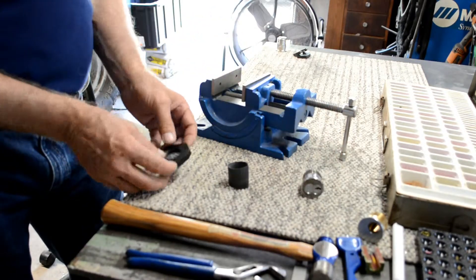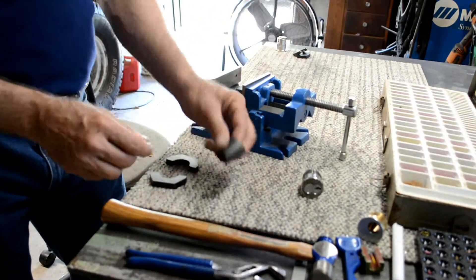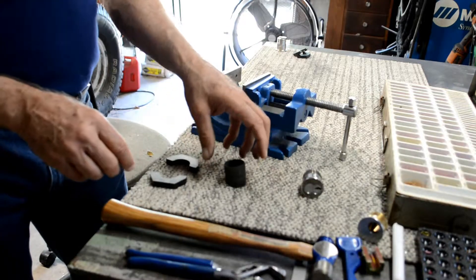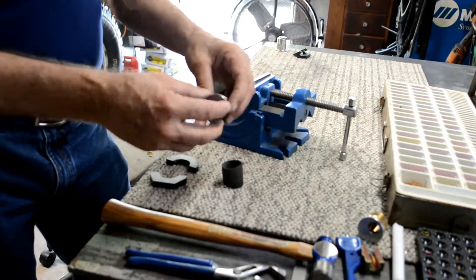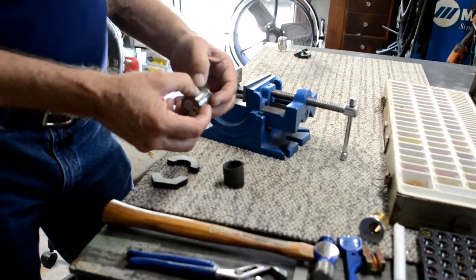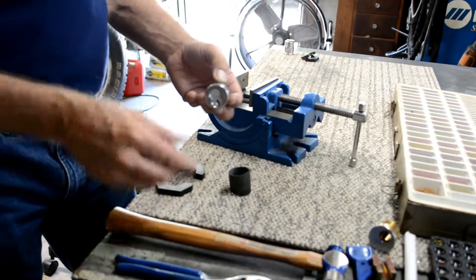In the package, what you'll have is a two-piece die and it'll also come with a piece of rubber. What we use the rubber for is we slide it over the face of the cylinder if the threads are damaged so bad that you have to grab it with a pair of channel locks.